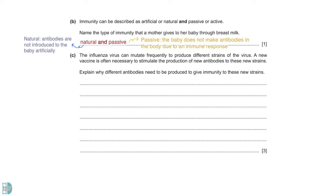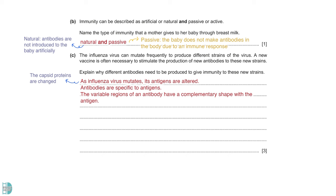The type of immunity a mother gives her baby through breast milk is natural and passive. It is natural as the antibodies are not introduced to the baby artificially. Passive means the baby does not make antibodies in the body due to an immune response. Says that the influenza virus can mutate to produce different strains. Explain why different antibodies need to be produced to give immunity to these new strains. When a virus mutates, its antigen is altered. The mutation causes a change in the capsid proteins. Antibodies are specific to antigens. The variable regions of an antibody have a complementary shape with the antigen. So, different antibodies with different variable regions are needed when the virus has mutated.